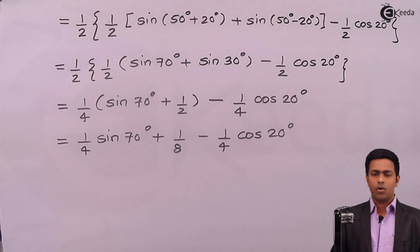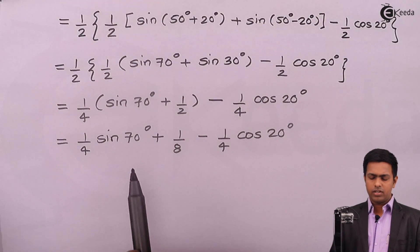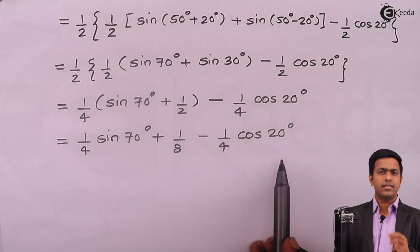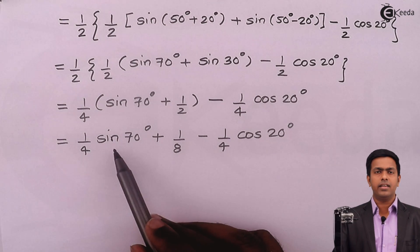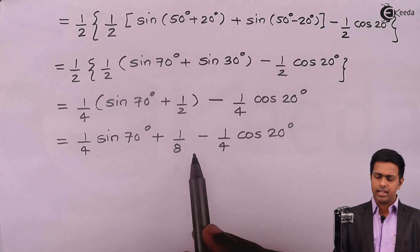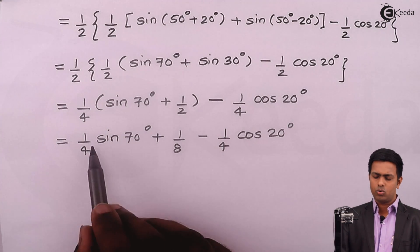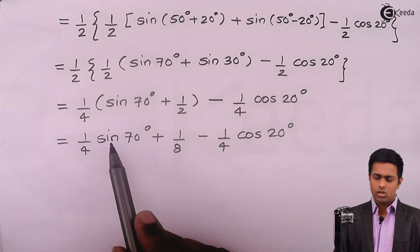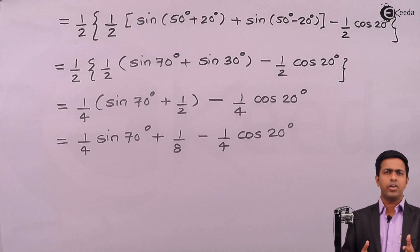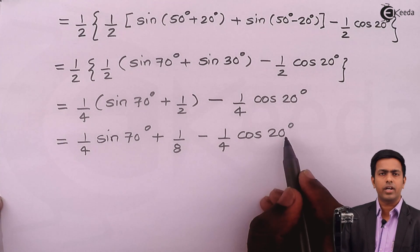We now have three terms. One of them is 1/8, which is our required answer. For the final result to be 1/8, the other two terms must cancel each other. One term is sine and the other is cosine, and they are opposite in sign. We will convert cos(20°) into sine so both terms become sine and can cancel.